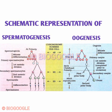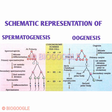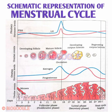Next is the schematic representation of spermatogenesis on the left and oogenesis on the right. In the examination, they will ask either spermatogenesis or oogenesis. When spermatogenesis is asked, write only the first two columns; when oogenesis is asked, write the last two columns.